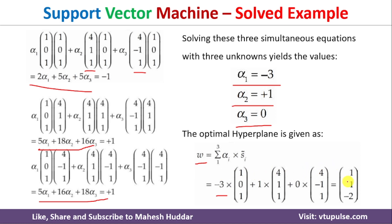Performing vector addition: the first component is -3 + 4 + 0 = 1; the second component is 0 + 1 + 0 = 1; the third component is -3 + 1 + 0 = -2. So once we solve this equation, we get the weight vector W = (1, 1, -2).